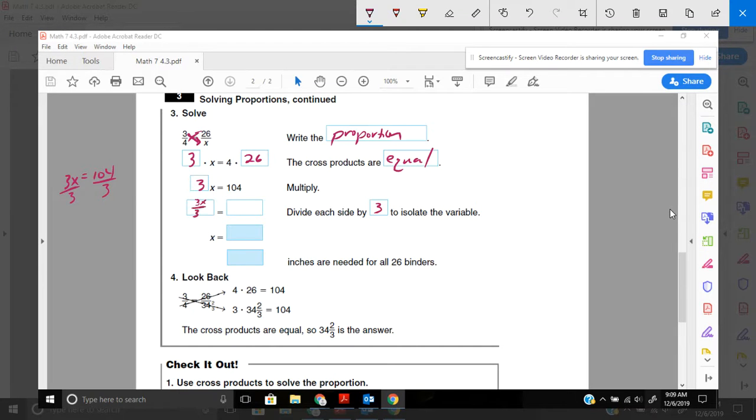So 3x, I need to divide that by 3. And 104, I need to divide by 3. And then 104 divided by 3. 3 goes into 10 3 times, which is 9. I'll subtract and get 1, and bring down my 4. And 3 goes into 14, let's see, 4 times, which is 12. Subtract, and I'll be left with 2. And I'm going to write it as a fraction. So I'm going to have 34 holes. And left over, I have 2. And my denominator is 3. So 34 and 2 thirds inches is what I'm going to need on my shelf for all the 26 binders.